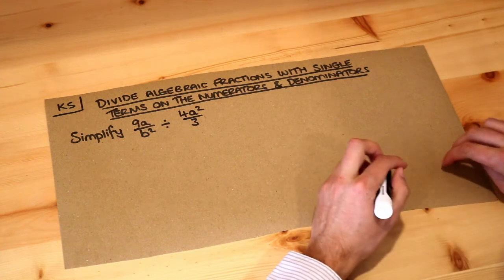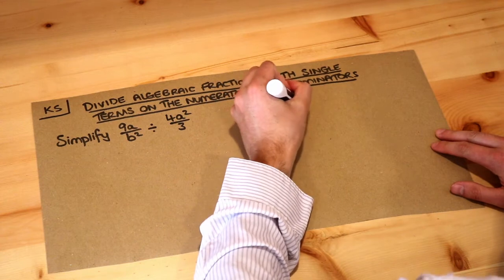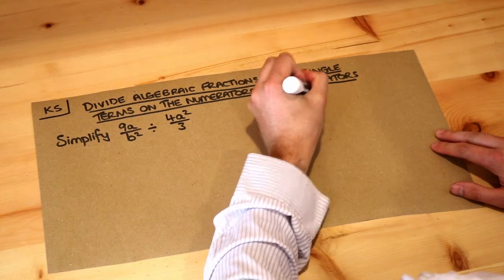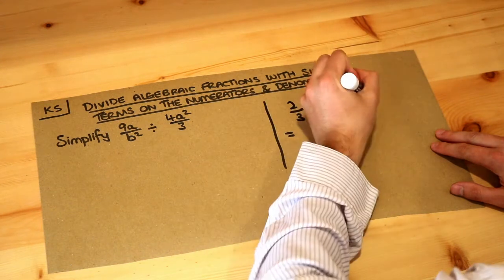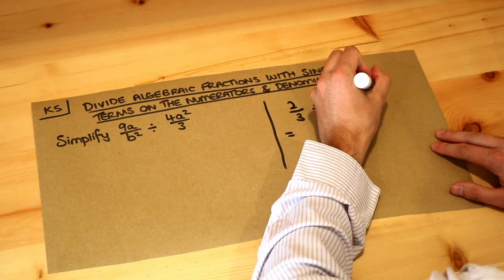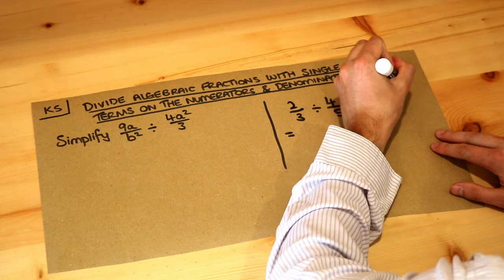Now let's just think how we usually divide fractions. If I had two-thirds divided by four-fifths, what do we do? Now do you remember the sort of keep, change, flip type method?